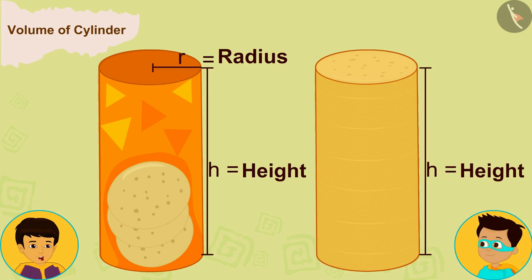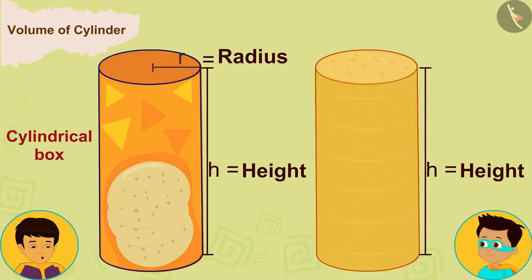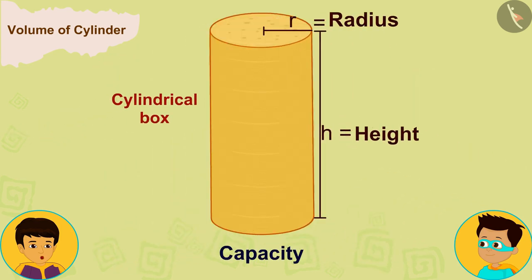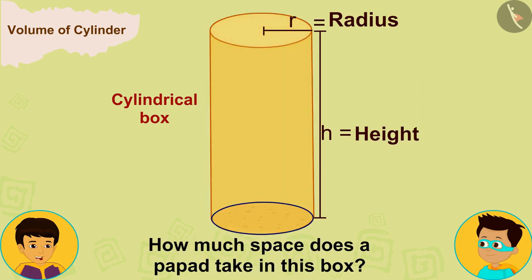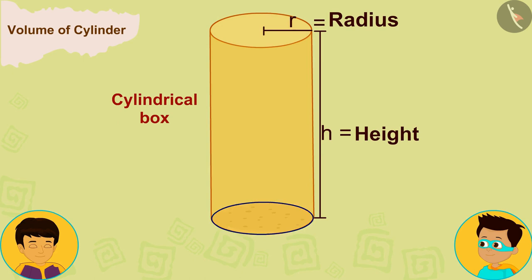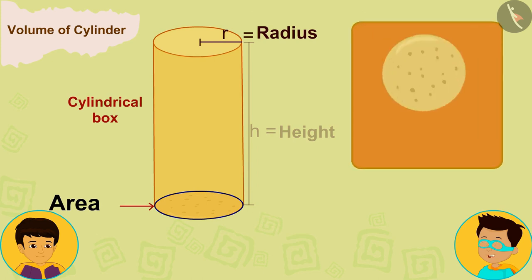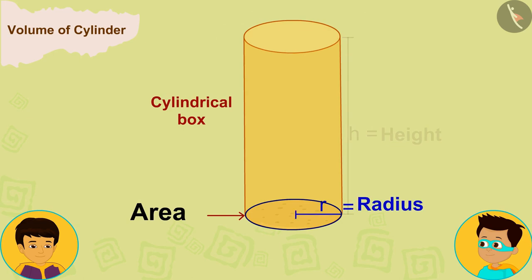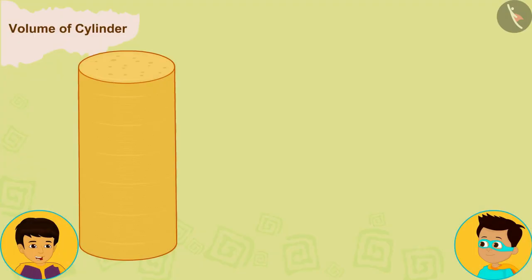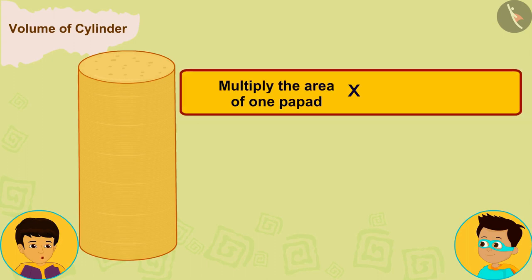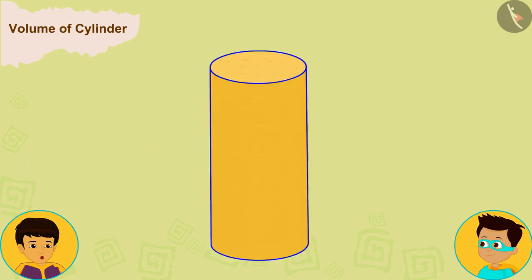Thomas, you already know that the space that these papads will occupy in this cylindrical box is equal to the capacity of this box. The amount of space that one papad occupies in this box will be equal to its area. We can assume that the height of the papad is negligible and so we can ignore it. A papad is a circle whose radius is r. All we have to do is multiply the area of one papad by the total number of papads that fit in the box, and we will know how much space all the papads are collectively occupying in this cylindrical box.